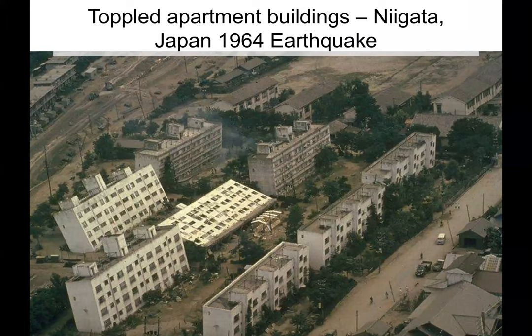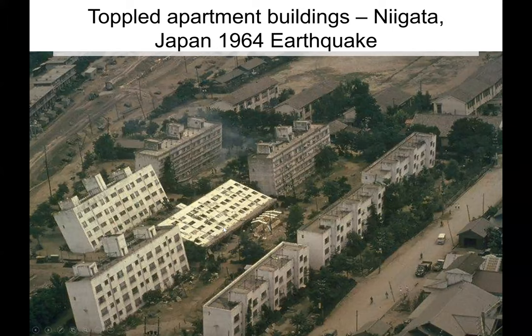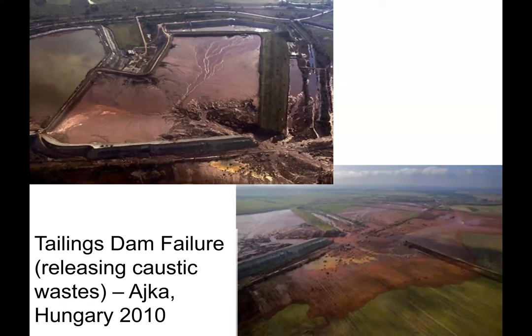Here are some apartment buildings in Niigata, Japan, that tipped over in 1964 — not because of poor foundation design, but because a giant earthquake liquefied the soil beneath them. Some buildings sank into the ground; others just tipped over. It almost looks like a flooded sandbox. People were climbing out of windows and walking down the sides of the buildings. The structures appeared fine, but a tipped-over building is not functional — all these buildings were total losses.